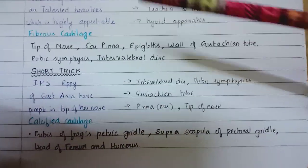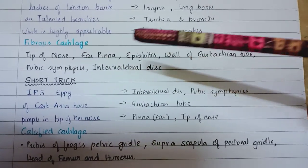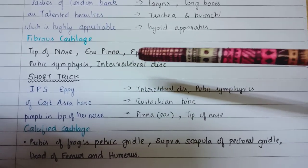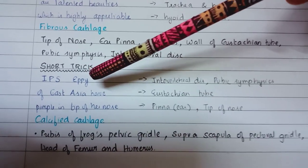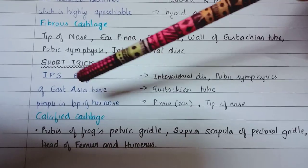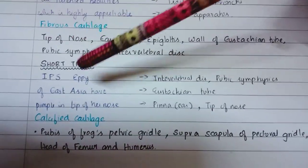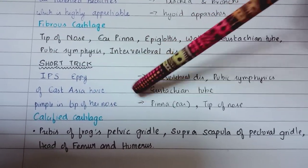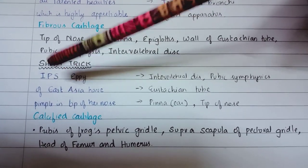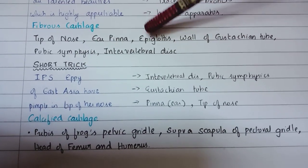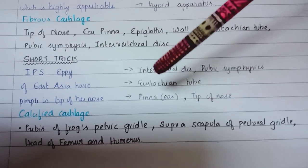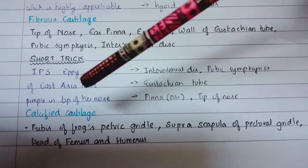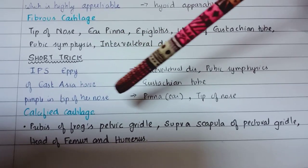Then we have fibrous cartilage, found in tip of nose, ear pinna, epiglottis, wall of eustachian tube, pubic symphysis, and intervertebral disc. The short trick is: IPS Epi of Eustachian Have Pimple in Tip of Her Nose. I for intervertebral disc, PS for pubic symphysis, Epi for epiglottis, Eustachia for eustachian tube, Pimple for pinna of ear, Tip of Nose for tip of nose.